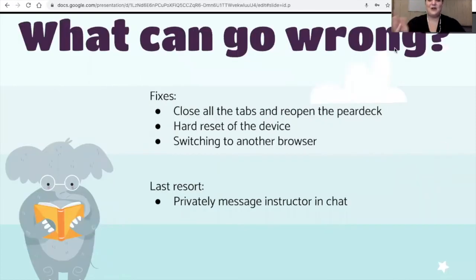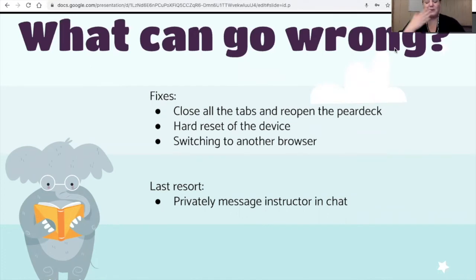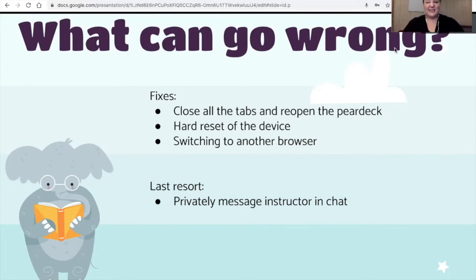We do need to talk about what can possibly go wrong, because things will always go wrong. At least once every class, even though I ask them before they log in to please do a hard reset, I still have to tell somebody. The kids are so used to it now — I just get a little message in the chat that says 'hard reset, be right back.' Things that can work: close all the tabs and reopen the Pear Deck again, a hard reset of the device, or even switching to another browser — if they're using Safari, go ahead and switch to Chrome. My very last resort — and it has happened — is to send me a private message in the chat to answer the question. If it's a multiple choice question I'll have kids privately put the answer in the chat, though I don't like that as much because they don't get takeaways of their learning either.